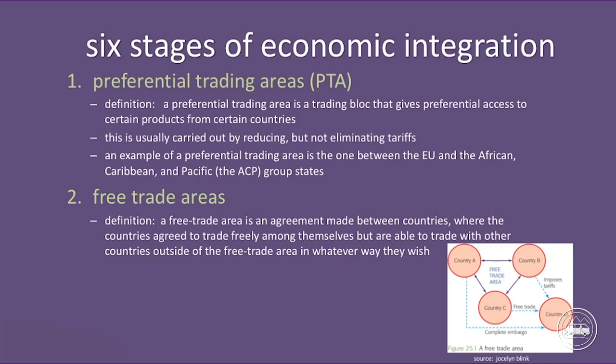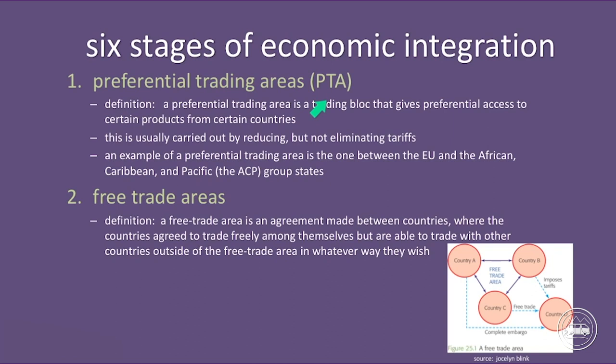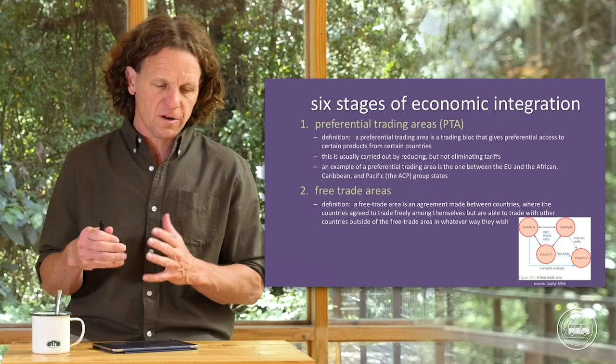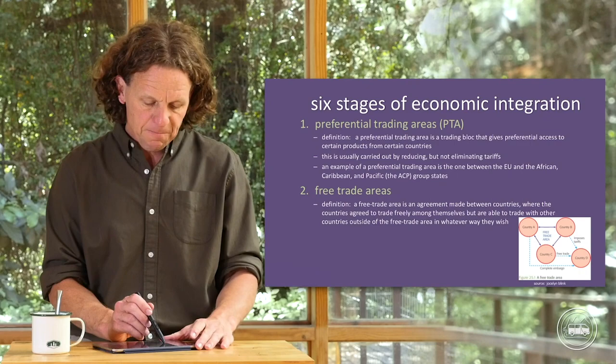So the first two stages are preferential trade areas and free trade areas. Preferential trade areas — abbreviated PTA — are a trading block that gives preferential access to certain products from certain countries. This is usually carried out by reducing but not eliminating tariffs. So certain goods from one country going to another country have tariffs, but the countries decide to work something out, so for a certain amount of goods they can come in with no barriers of trade or no tariffs associated with them.